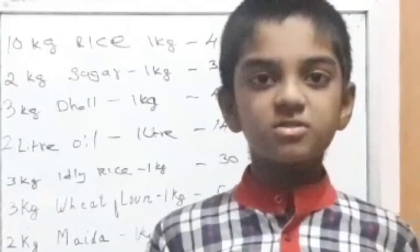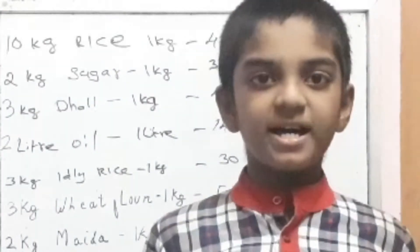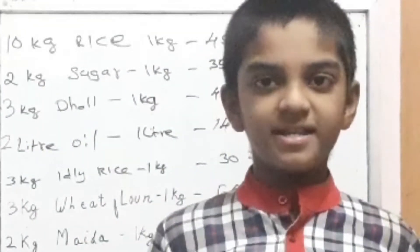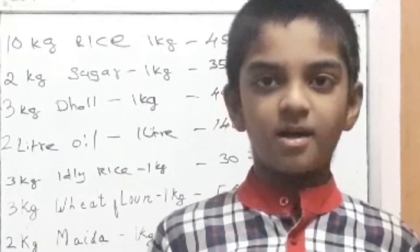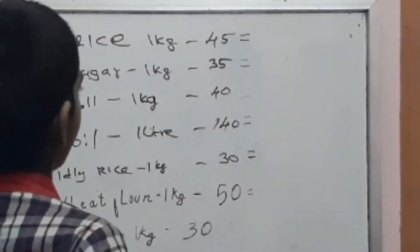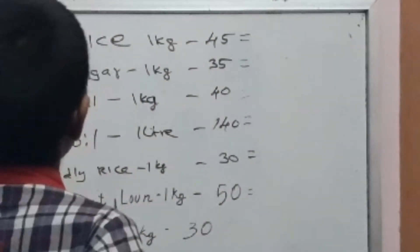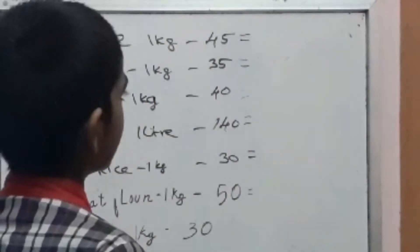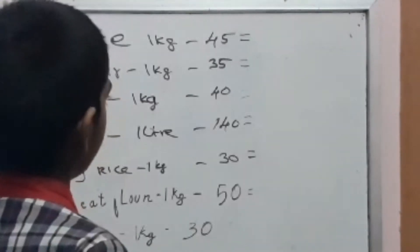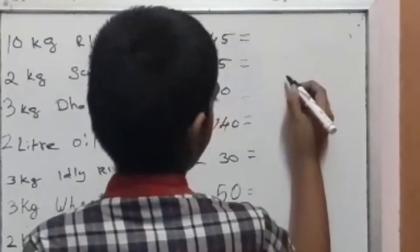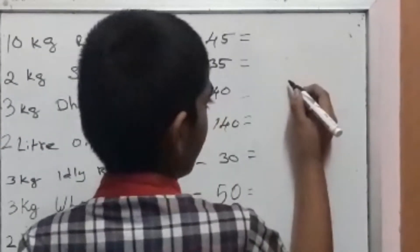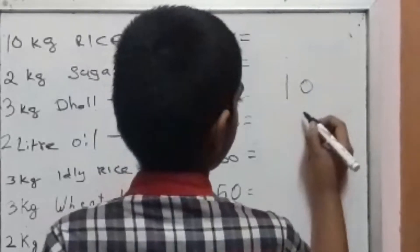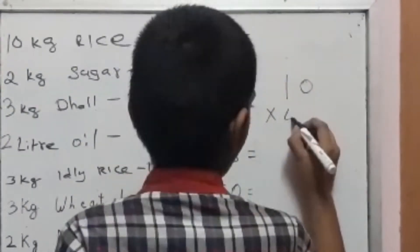I am going to do the multidisciplinary project. 10 kg rice, 1 kg equal to 45 rupees. So we have to multiply 10 into 45.